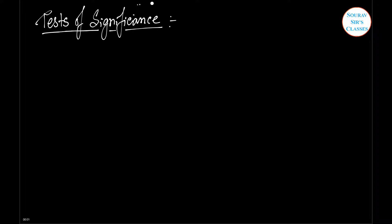Hi everyone, this is the second part of large sample theory. Today's topic is test of significance. A very important aspect of sampling theory is the study of the test of significance, which enables us to decide on the basis of sample results if the deviation between the observed sample statistic and the hypothetical parameter value, or the deviation between two independent sample statistics, is significant or might be attributed to chance or the fluctuations of sampling.